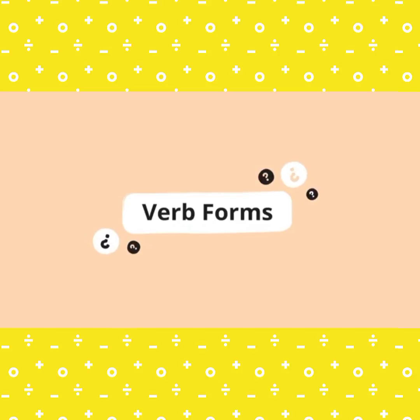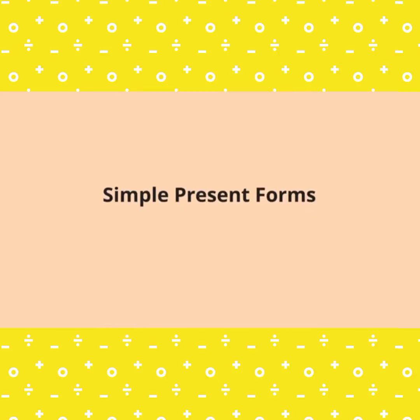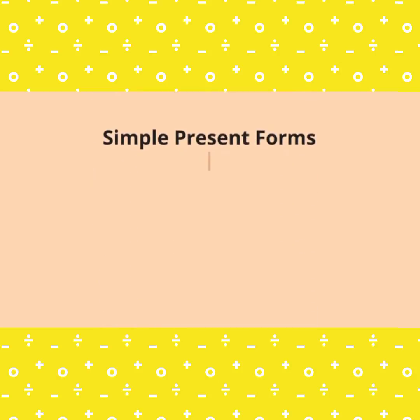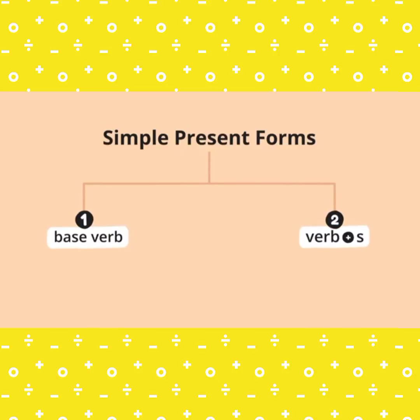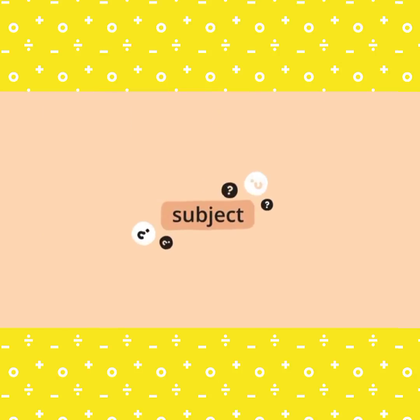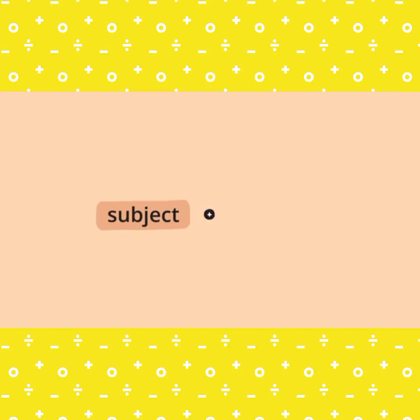Verb forms. Simple present verbs have two forms: base verb, and verb plus S. Which verb form we use depends on the subject of the sentence.